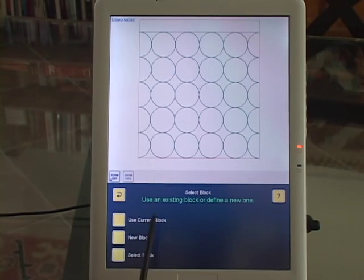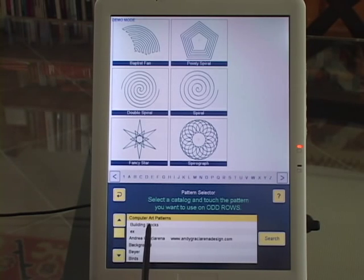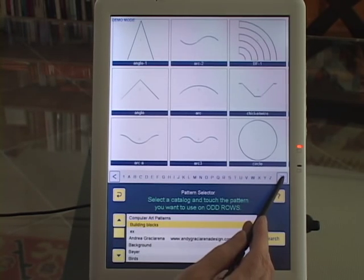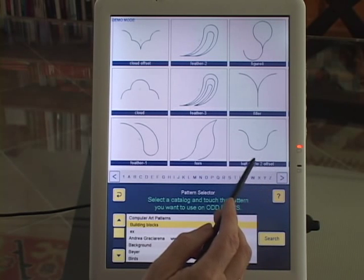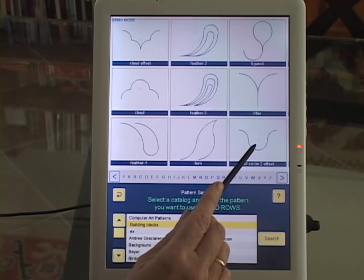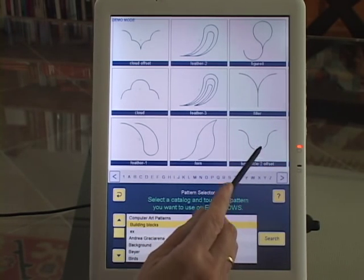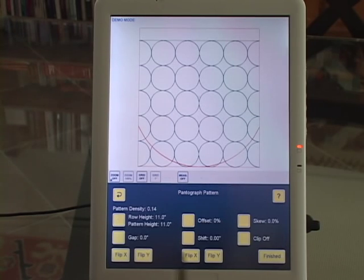It's the big one, the 10 by 11 that's red, so use current block. Again, go into my building blocks or your geometric, and I'm going to get half circle two offset. Again, reduce the row height to two inches.